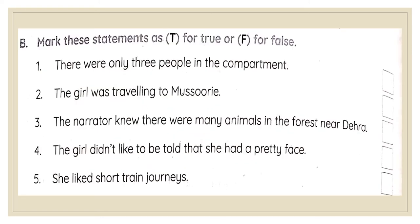Coming to true and false. 'There were only three people in the compartment.' — False. 'The girl was traveling to Mussoorie.' — False. 'The narrator knew there were many animals in the forest near Deira.' — you will have to come up with the answer. 'The girl didn't like to be told that she had a pretty face. She liked short train journeys.' — Answer these and complete them in your textbook.